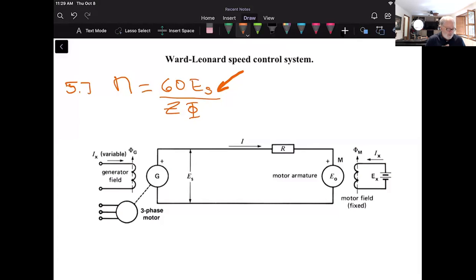So what we're doing, we can vary E sub S by connecting the motor armature here, right, the motor armature to a separately excited variable DC generator, this guy. The field excitation of the motor is kept constant, it's fixed, but the generator excitation is variable.